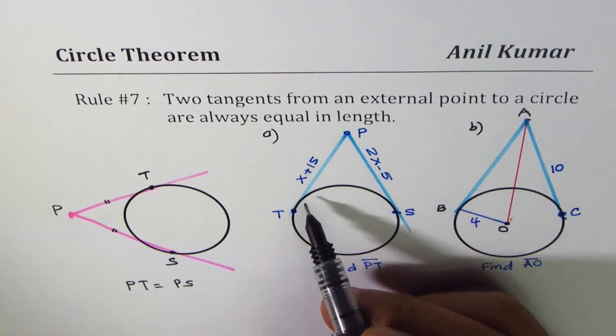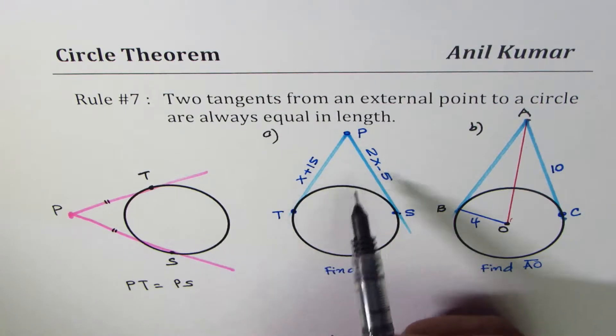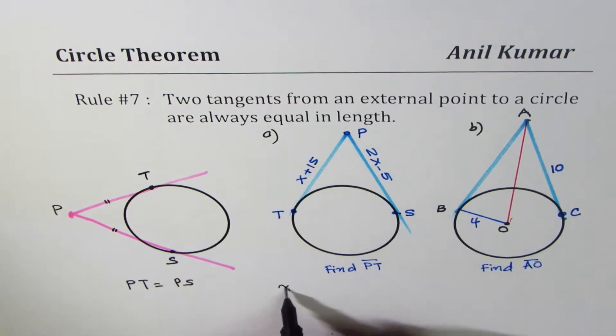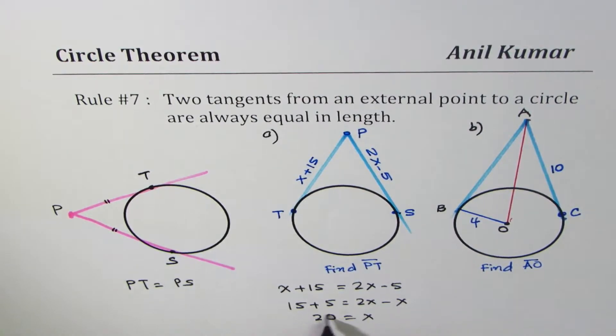So let's do part A. As per the rule, the length of these two tangents is equal. So therefore, x plus 15 should be equal to 2x minus 5. Bringing constants together, we can say 15 plus 5 is equal to 2x minus x, or x is equal to 20.